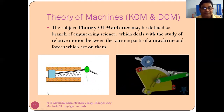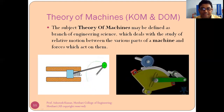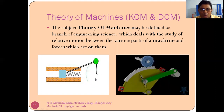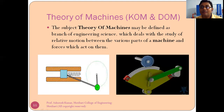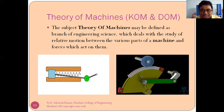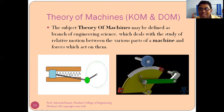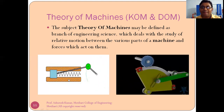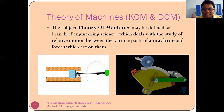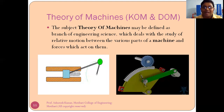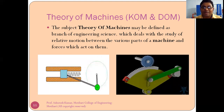For example, if you look at a piston-cylinder arrangement — this big rod is known as the connecting rod, this small rod is known as the crank, the sliding part is known as the piston, and the fixed housing is the cylinder. In this mechanism, various parts like crank, connecting rod, spring, piston, and cylinder each have some relative motion with each other. In theory of machine, we study the relative motion between various parts and the forces which act on them.